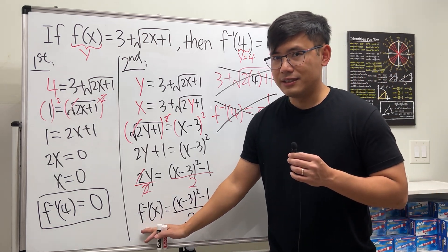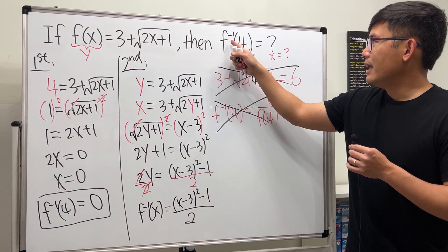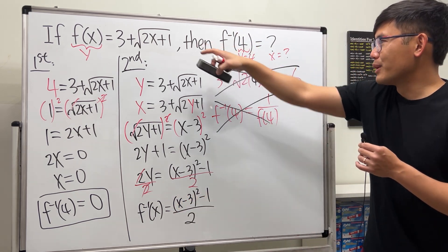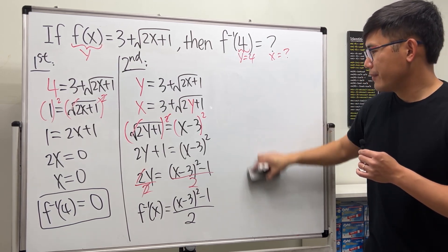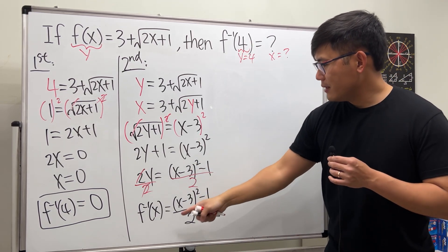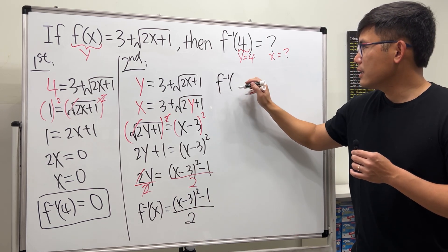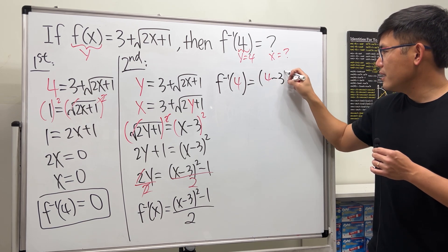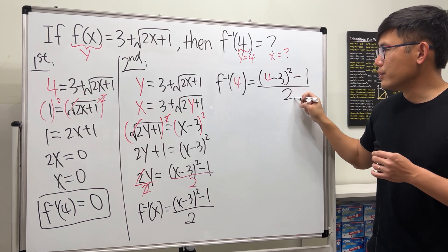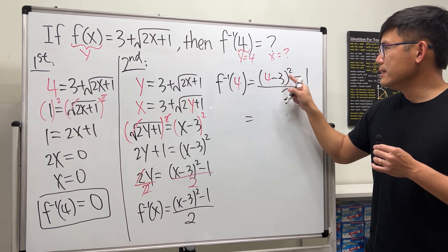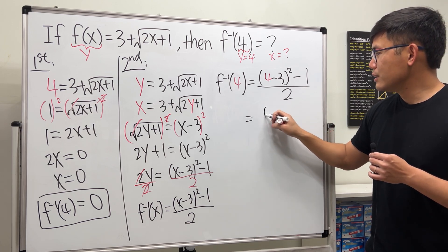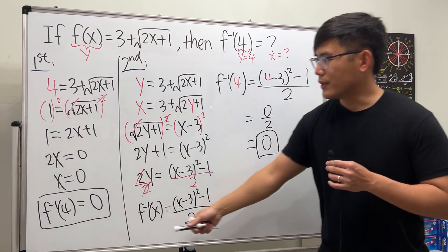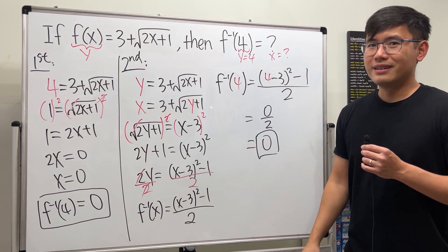Now we have this. The question is asking us for f inverse of 4, so of course we can just plug in the 4 into here, not here, not the original. So ladies and gentlemen, put the 4 in there. We get f inverse of 4 being equal to 4 minus 3 squared minus 1, all over 2. This is 1 squared is 1, minus 1 is 0, 0 over 2, the result is equal to 0. So of course same answer. Which method do you guys like more? Let me know.